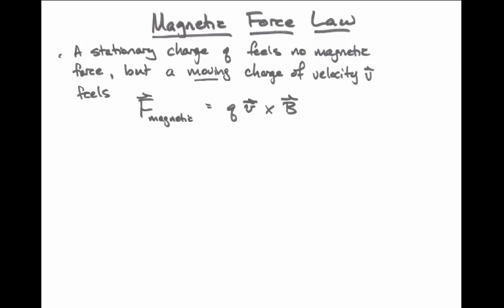The force on the charge is equal to the vector cross product, v cross b, multiplied by the charge of the object. That represents the force on the object.